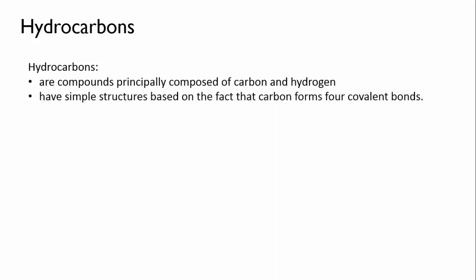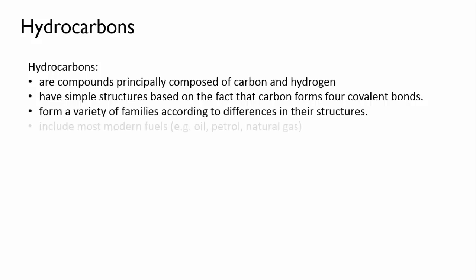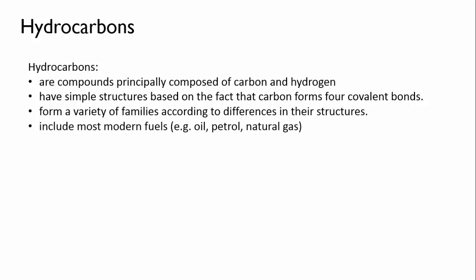To summarize hydrocarbons: hydrocarbons are compounds principally composed of carbon and hydrogen. They have simple structures based on the fact that carbon forms four covalent bonds, and they form a variety of families according to differences in their structures. They also include most modern fuels like oil, petrol, and natural gas. The two simplest hydrocarbon families are the alkanes and alkenes, and these have different chemical properties because of a difference in their bonding.